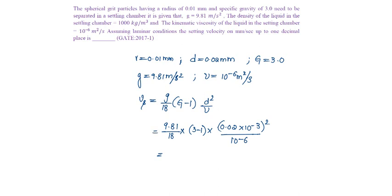That will be 4.36 into 10 power minus 4 meter per second but is required to calculate in mm per second. That will be 4.36 into 10 power minus 4 into 10 power 3 mm per second. So, that is 0.436 mm per second. The answer is 0.436 that is nearly 0.44.